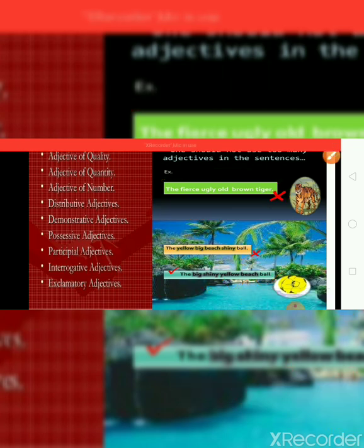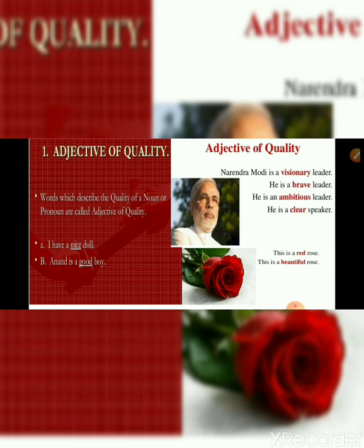Let's talk about the first type of adjective, which is adjective of quality. Words which describe the quality of a noun or pronoun are called adjectives of quality. For example: I have a nice doll — in this sentence, nice is an adjective of quality because the word nice is describing the quality of a doll. Anand is a good boy — if we know Anand, we should know how he is. Here the word good is showing the quality, so it is an adjective of quality.